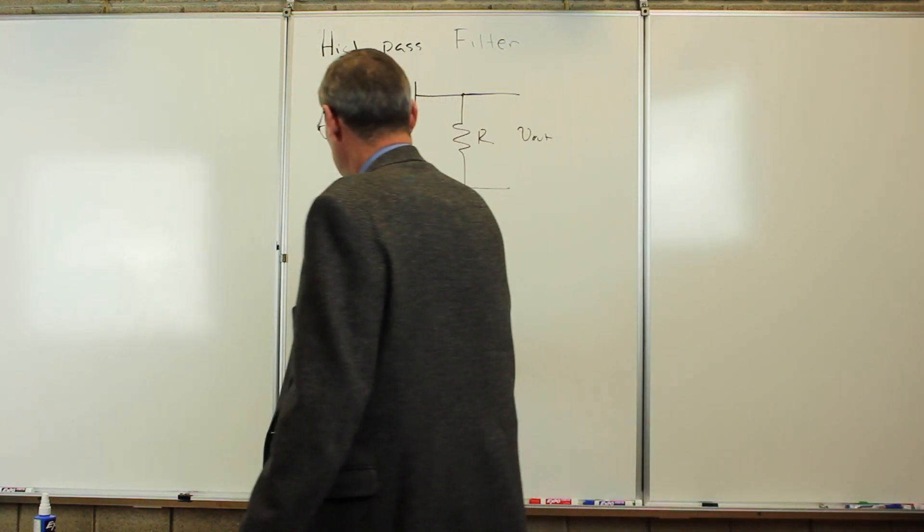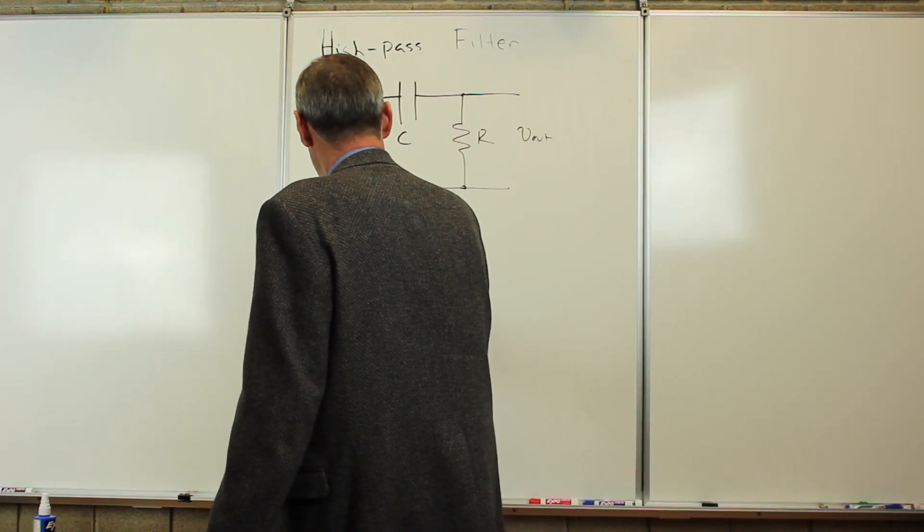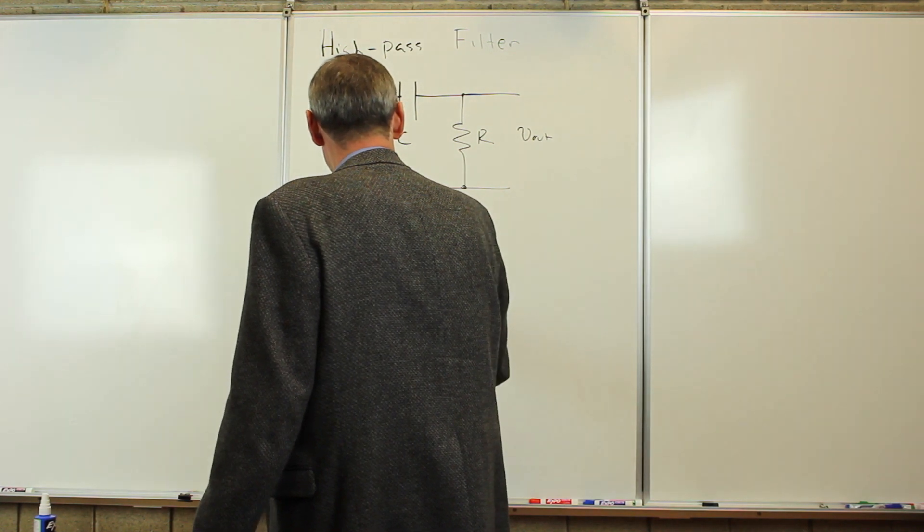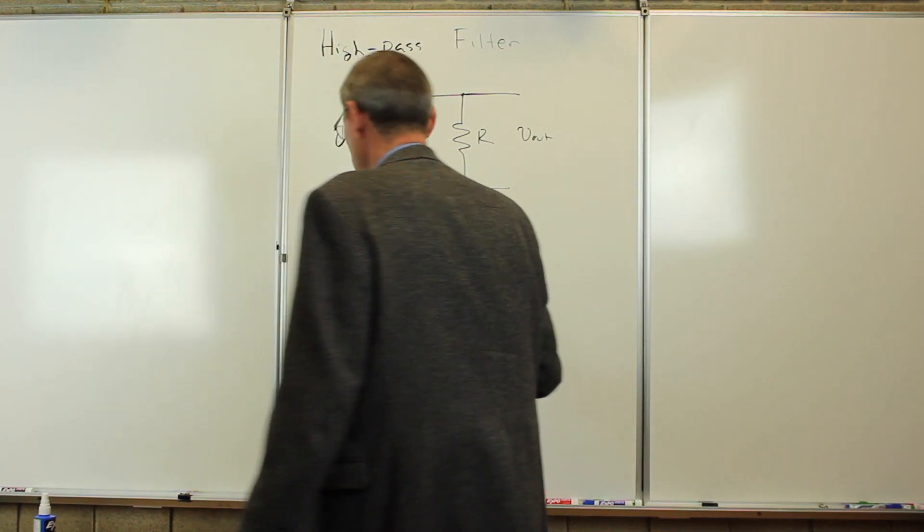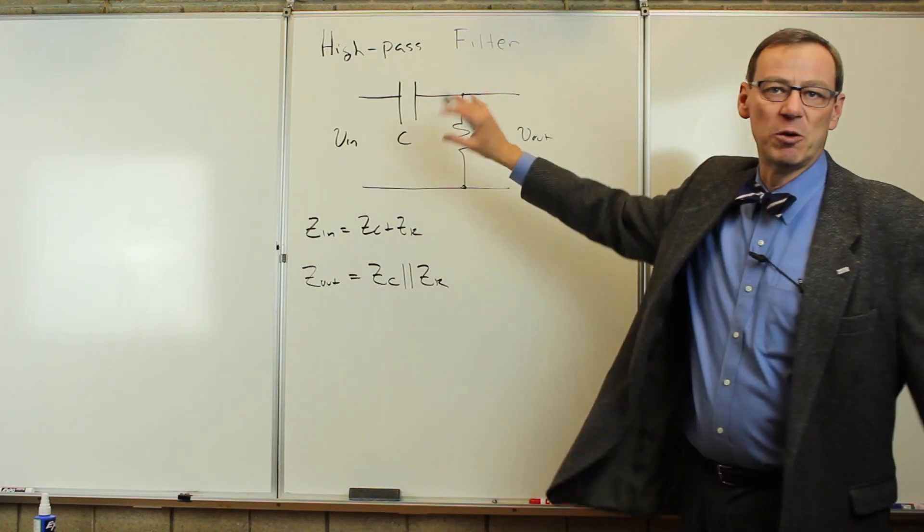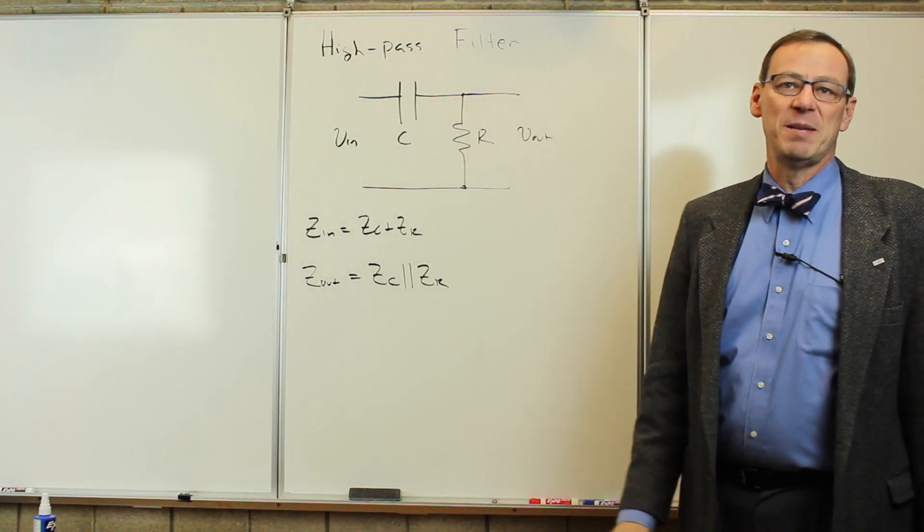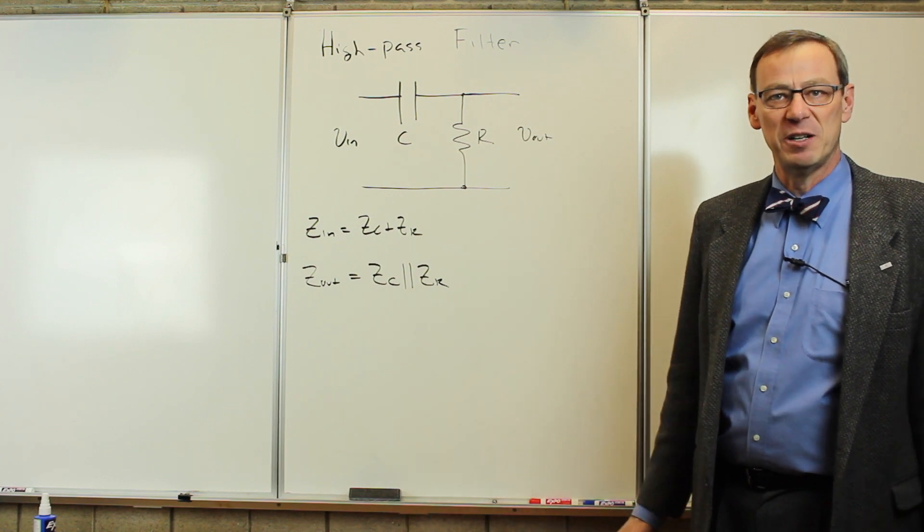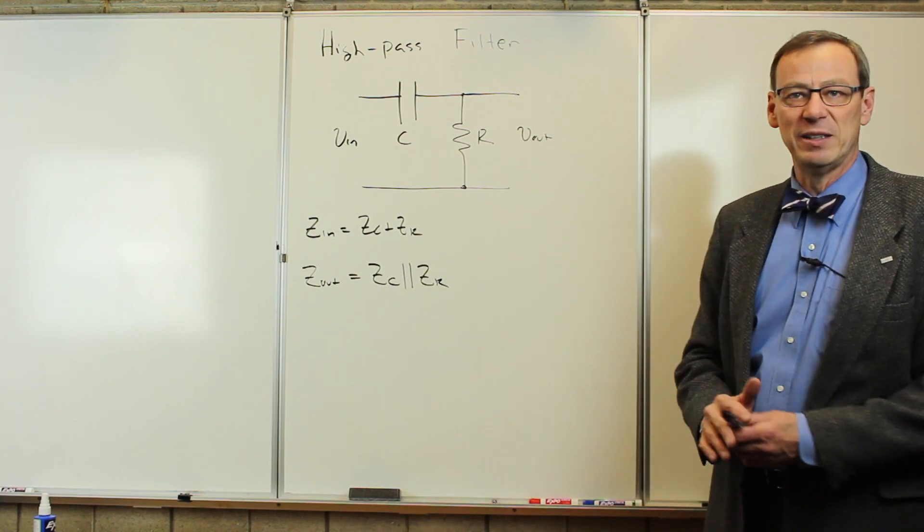How about the output impedance? Zout is Zc parallel to Zr. Well, that's exactly the same thing we had for the low-pass filter too. It didn't matter what the order was. It was the parallel combination, so that's the same as the low-pass filter. Nothing's changed there either.